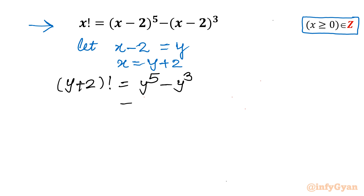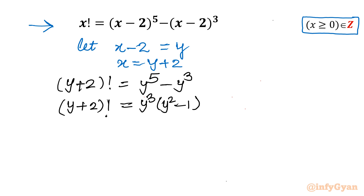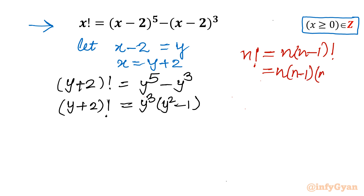On the right-hand side, I can take y cubed common, giving y cubed times (y squared minus 1). The left-hand side remains (y plus 2) factorial. Now I will use the recursive formula: n factorial equals n times (n minus 1) factorial, or n times (n minus 1) times (n minus 2) factorial, and so on.